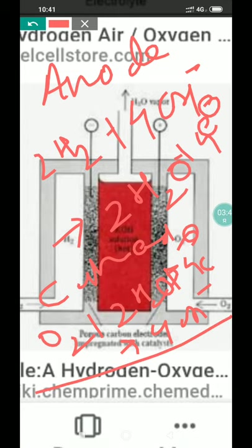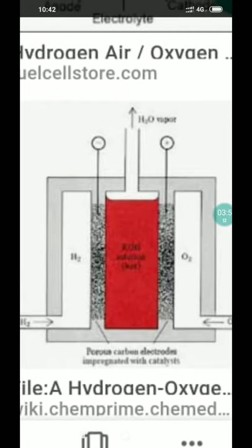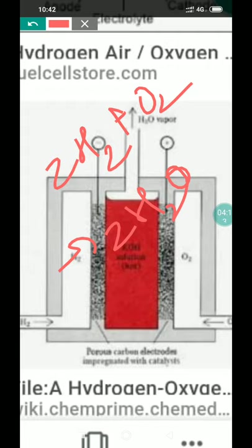The overall or net cell reaction is the addition of the anode and cathode reactions: 2H₂ plus O₂ gives 2H₂O. This is the net cell reaction — the overall cell reaction is the combustion of hydrogen to form liquid water. The fuel H₂ gas and the oxidant O₂ do not react directly; the chemical energy released during the formation of OH⁻ is directly converted into electrical energy. The cell continues to operate as long as H₂ and O₂ gases are supplied to the electrodes.